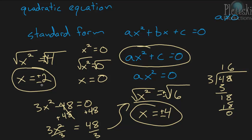Because when you plug your answer for x back into the original equation — in that first one, x squared equals 4 — when you plug in positive 2, it works: 2 squared is 4. And when you plug in negative 2, it also works. Same thing with the last example: both positive 4 and negative 4 plug into the original equation and work.